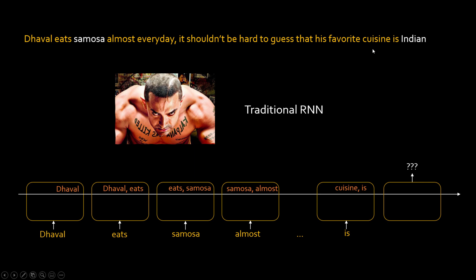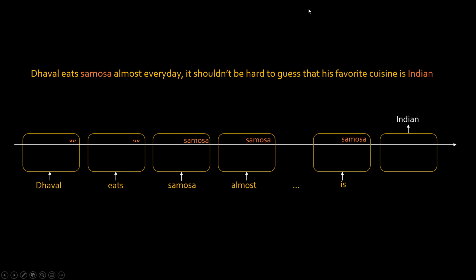Hypothetically, let's assume the RNN remembers only the last two words. So when it has 'cuisine is,' it cannot predict that this is an Indian cuisine because it has to remember 'samosa.' So if you have a network which can remember the important keywords — when it sees 'the whole eats,' it doesn't remember anything because it's not important, but when it comes to 'samosa,' it carries that long-term memory all the way. Then at the end, when you want to make a guess on what that cuisine is, you can use that memory and deduce that it's an Indian cuisine.